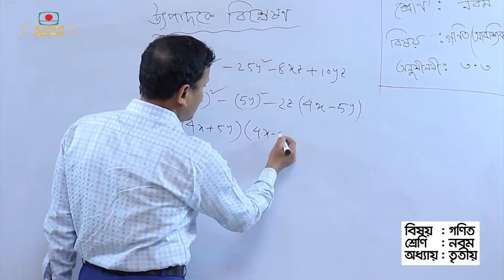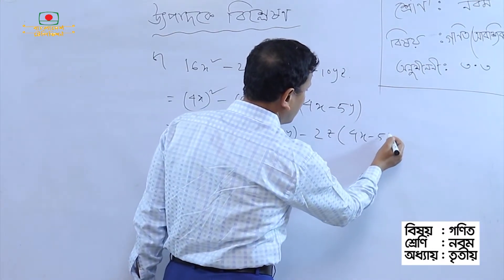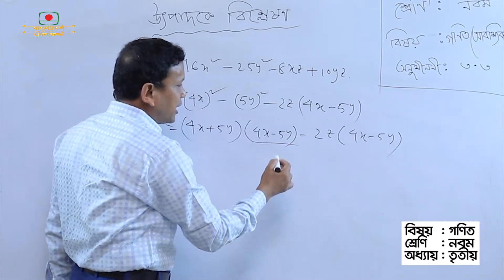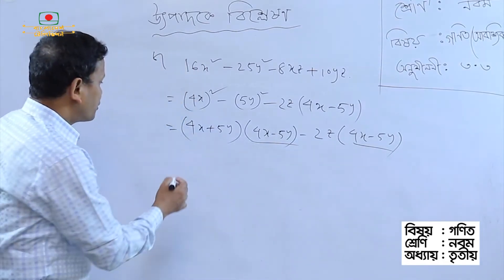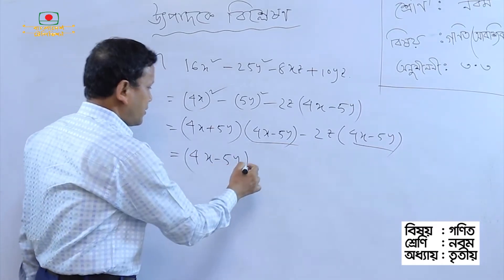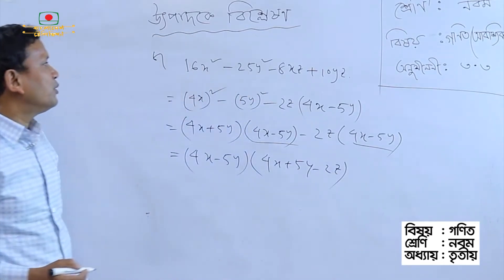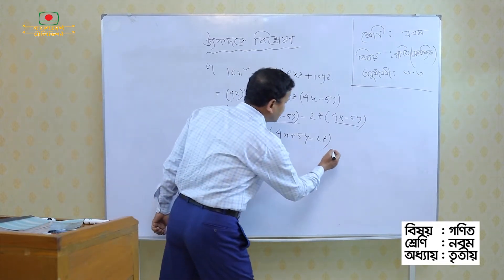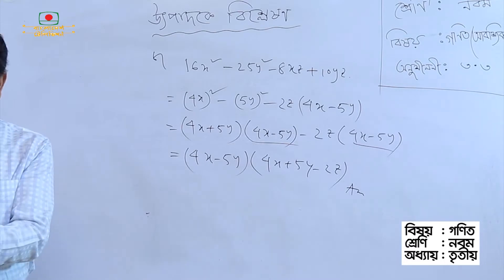Here a is equal to 4x minus 5y, and 4x minus 5y is equal to 7. So we can see that this is equal to a common factor: 4x plus 5y minus 2z. So this is equal to 4x minus 5y into 4x plus 5y minus 2z.